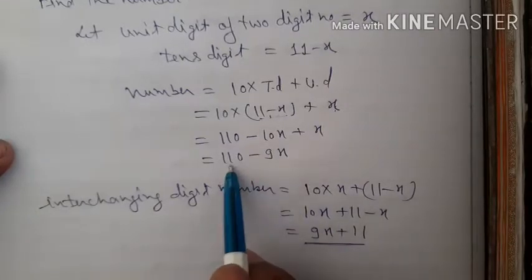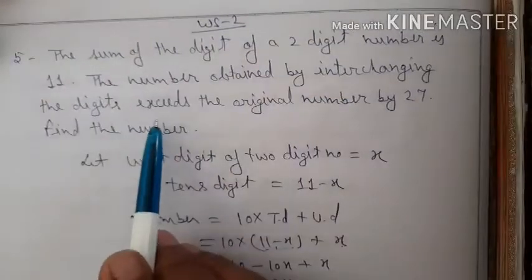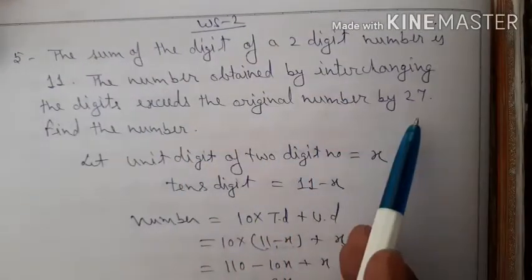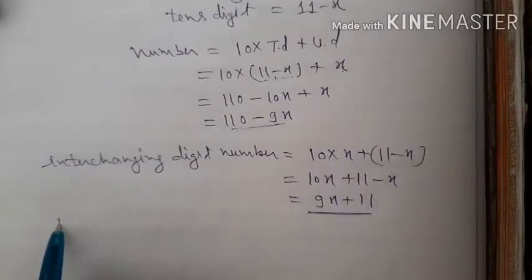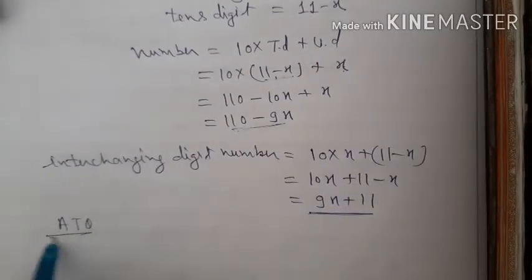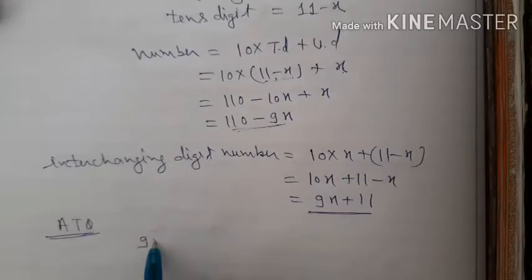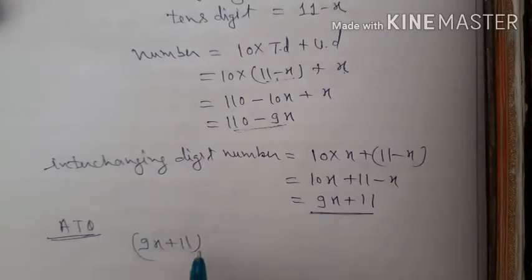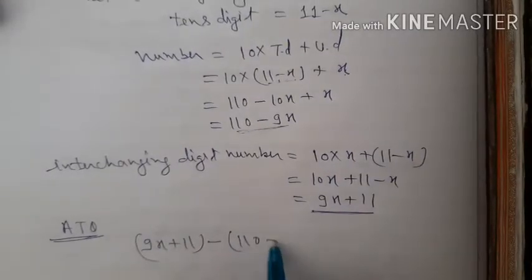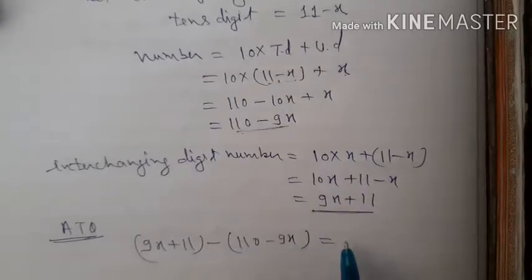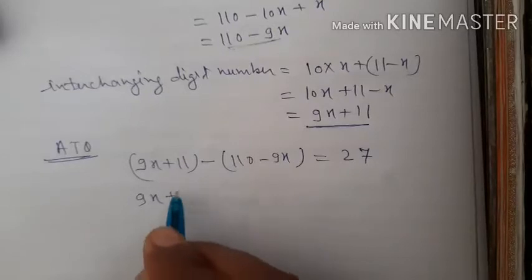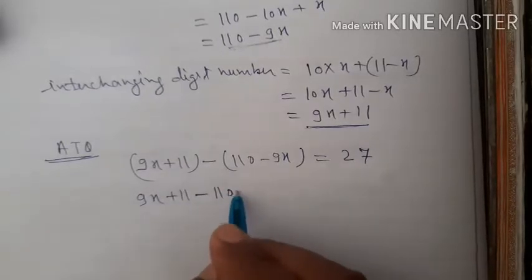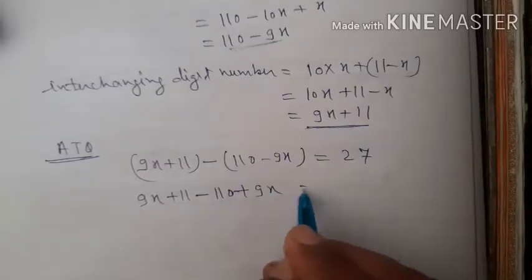The interchanging number exceeds the original number by 27. So interchanging number minus original number equals 27. Simplifying: (9x plus 11) minus (110 minus 9x) equals 27. Opening the bracket: 9x plus 11 minus 110 plus 9x equals 27.